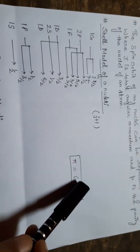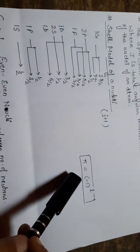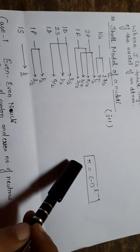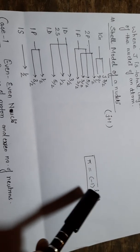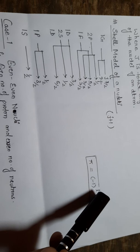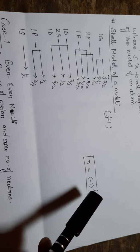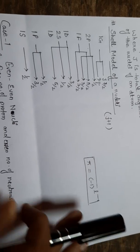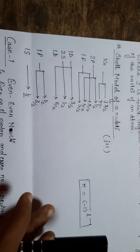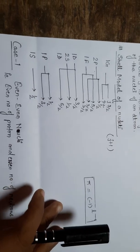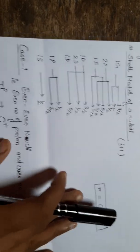For the calculation of parity, we use the formula: parity equals minus one to the power l, where l is the orbital angular momentum. Now there are three possibilities for spin parity prediction.